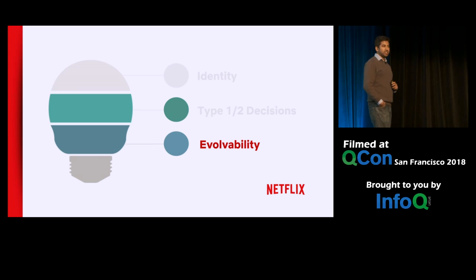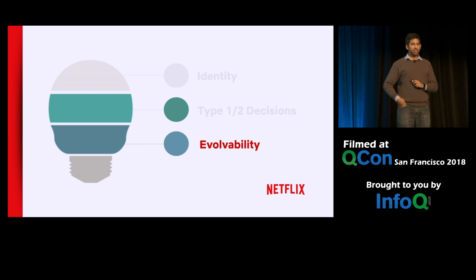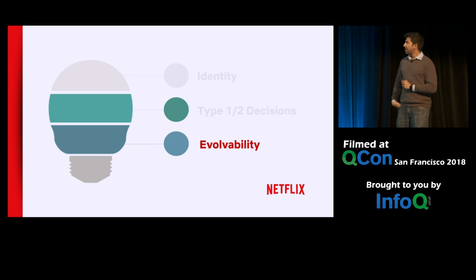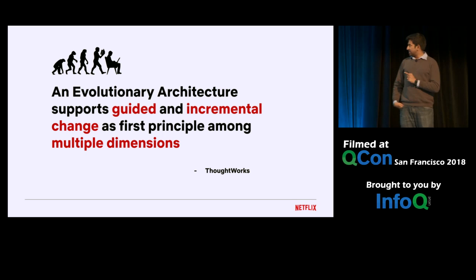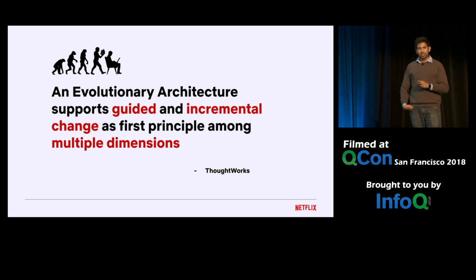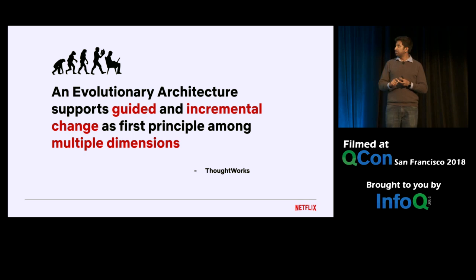The third part of my talk is around evolvability. Evolutionary architecture is a term coined by Rebecca Parsons and Neil Ford from ThoughtWorks. They define it as: an evolutionary architecture supports guided and incremental change as a first principle across multiple dimensions. There are three key words here: it's designed for change, every change is guided, and most importantly, we should be able to evolve across multiple dimensions.